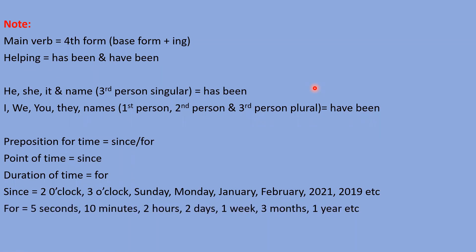And for duration — 'I have been teaching you for five seconds,' 'for ten minutes,' 'for two hours,' 'for two days,' 'for one week,' 'for two or three months,' 'for one year' — for these types of time expressions, we should use 'for.'